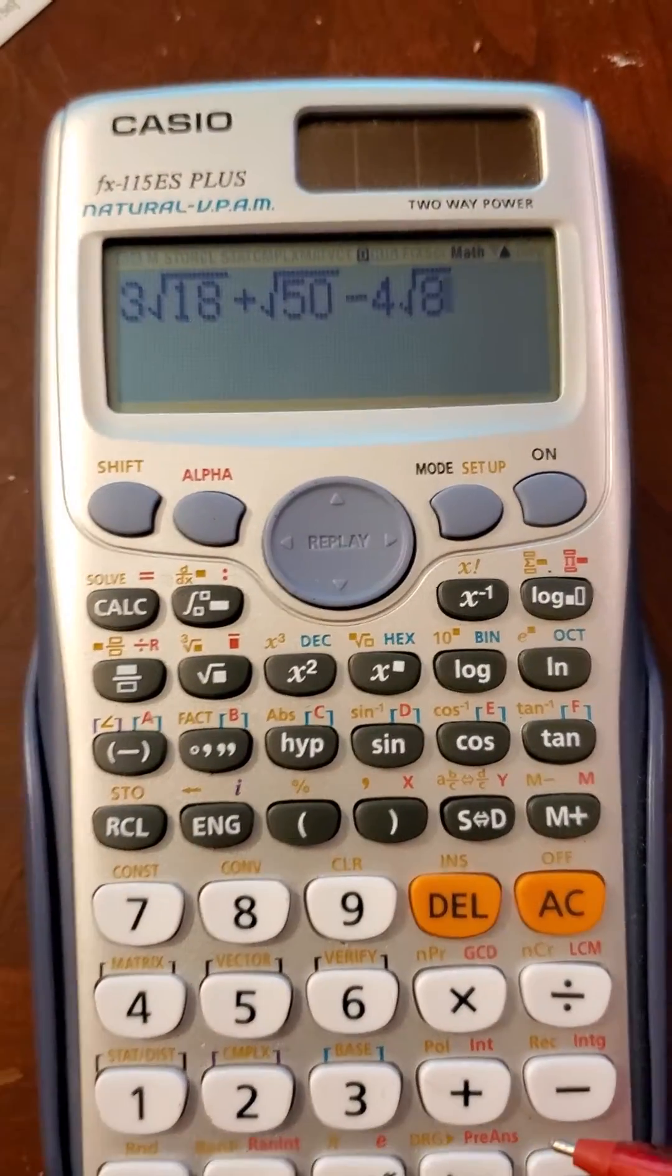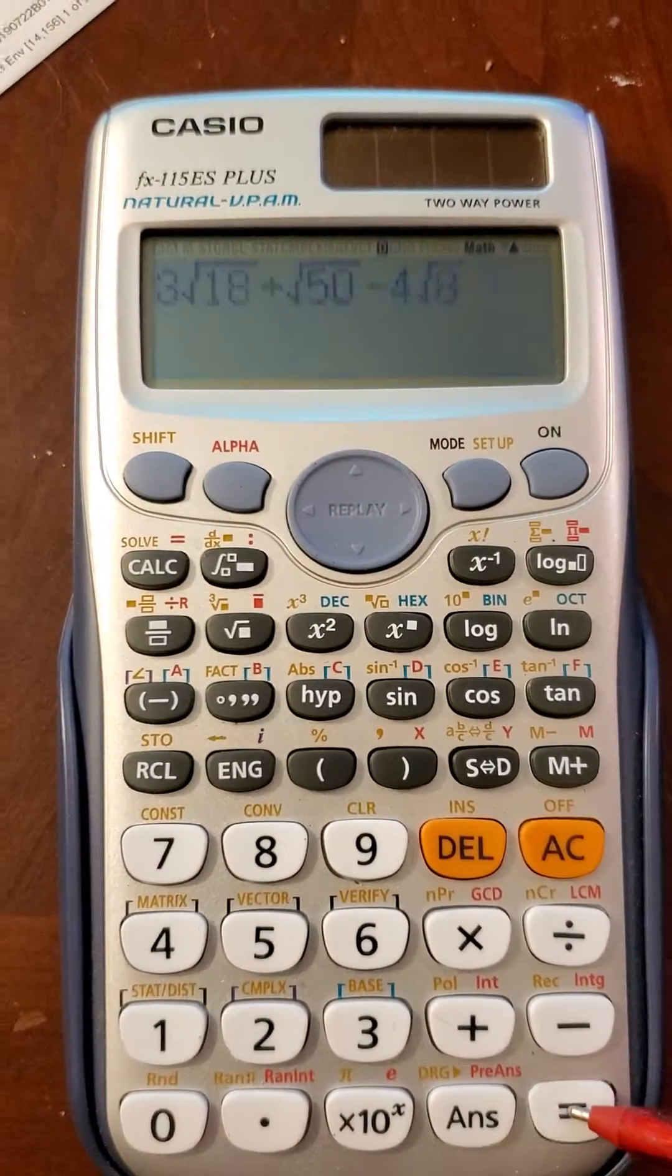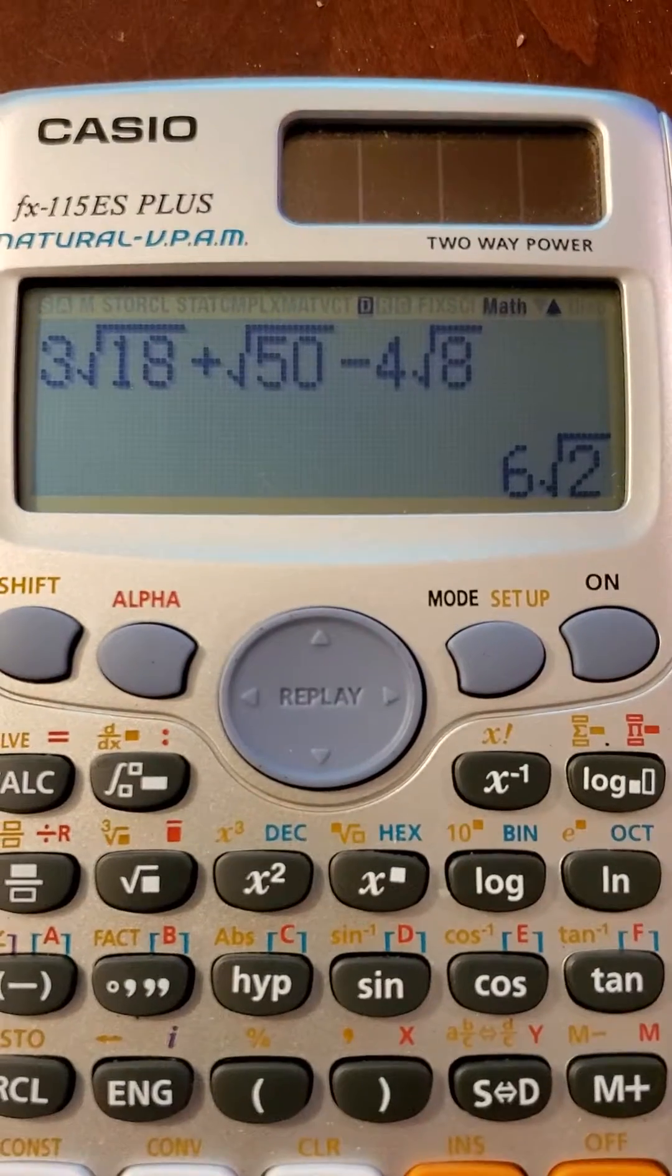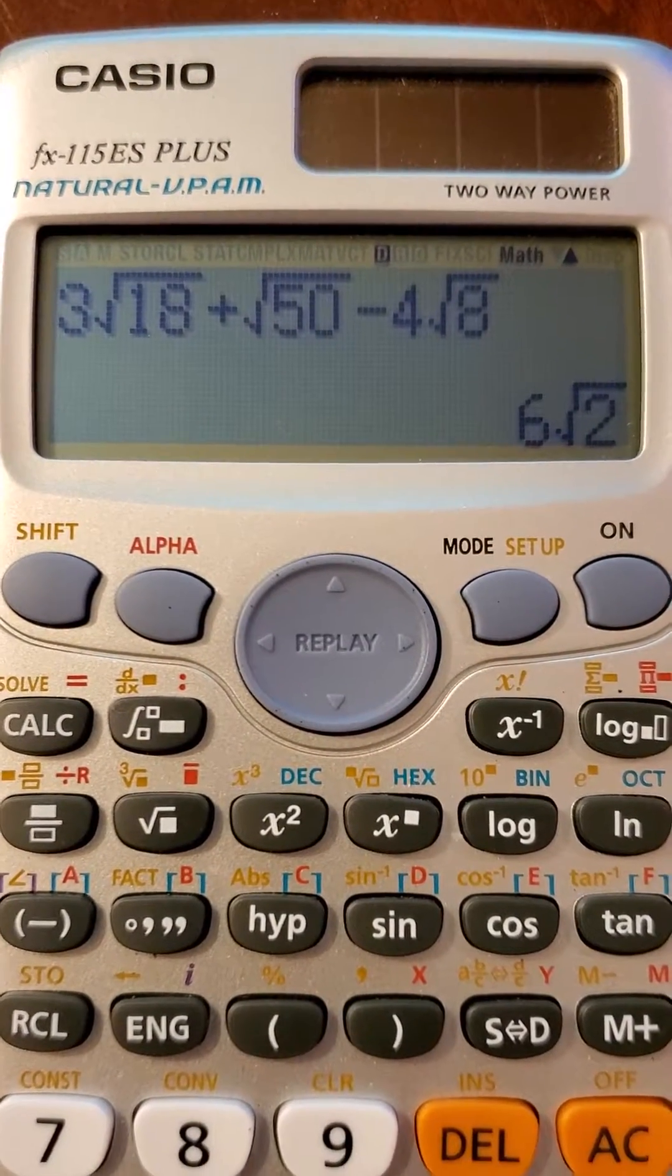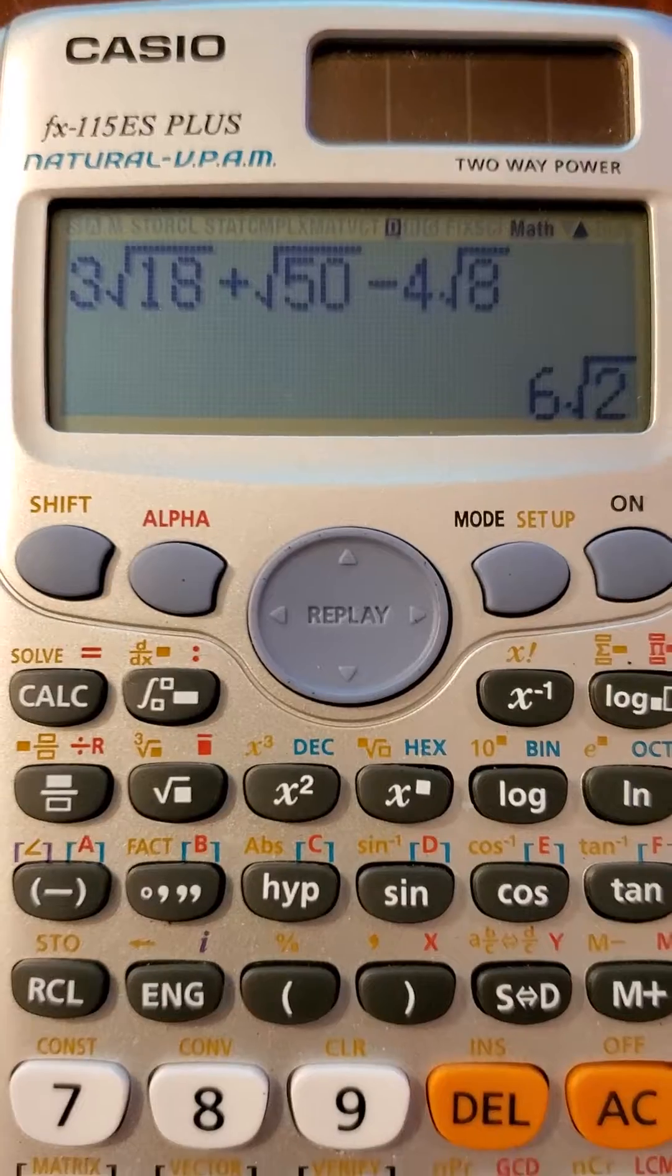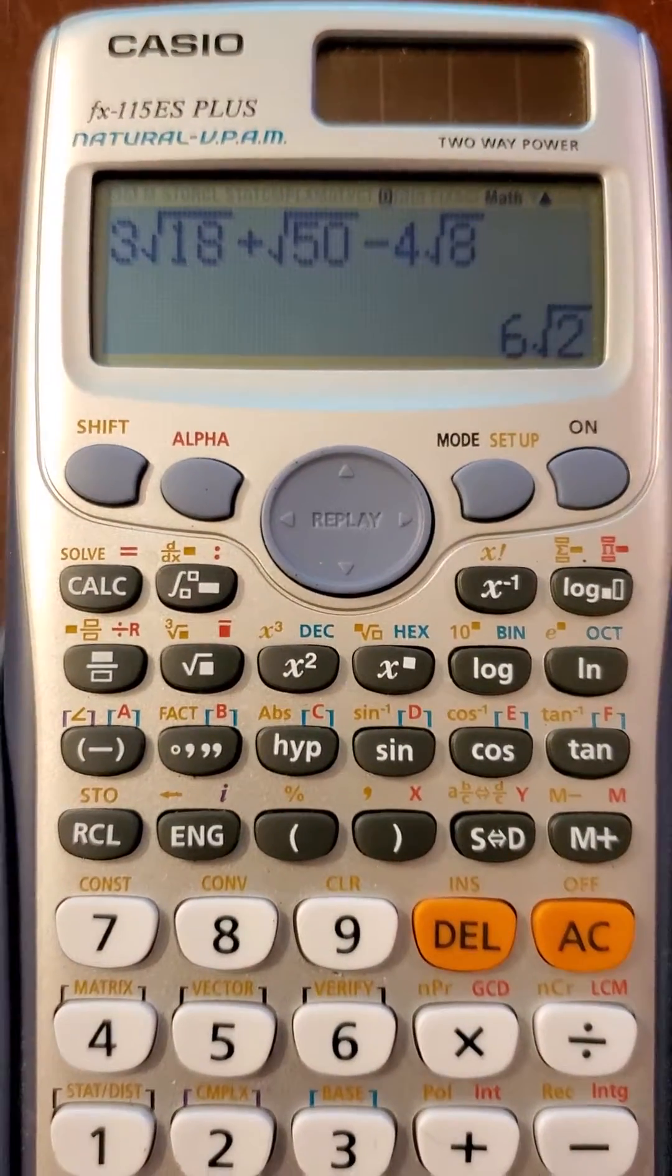What the calculator is going to do for you, if we hit the equal sign button, it gives the simplified radical for you. It does all the work for you. That's how freaking awesome this calculator is.